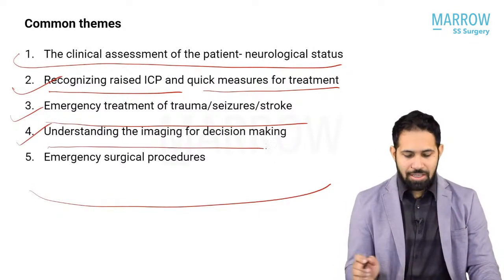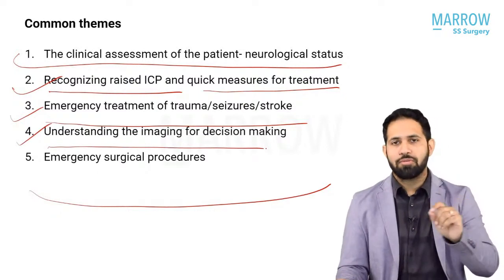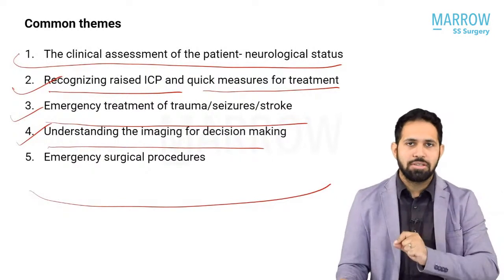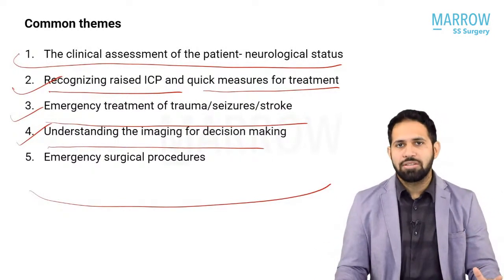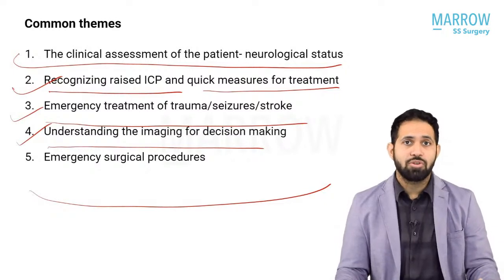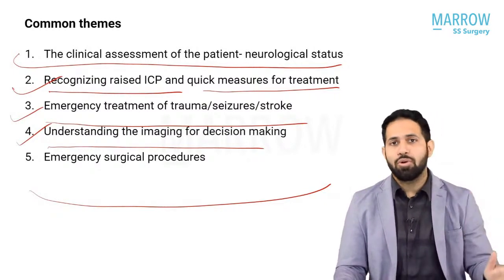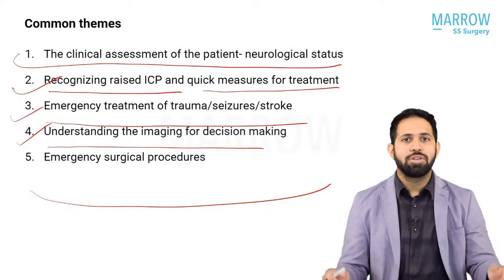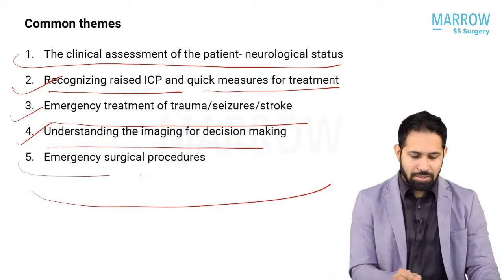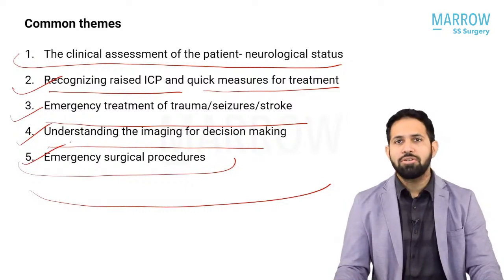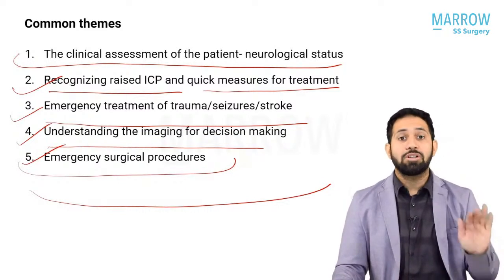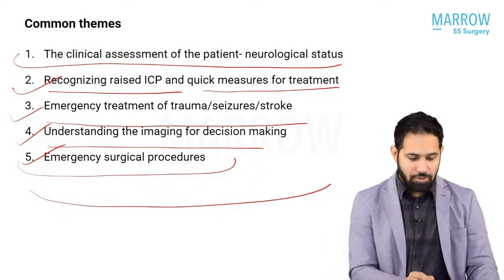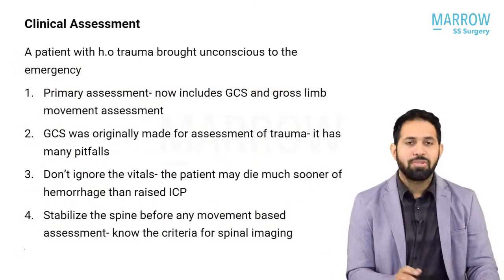The third concept is emergency treatment for trauma, seizures and stroke, which must happen immediately even at the assessment stage. Fourth is understanding the imaging for decision making — you often follow the patient to the CT or MRI, quickly read it, and make a decision about getting the operation theater ready. Finally, certain emergency surgical procedures that are commonly asked in MCQs are often done in the emergency room itself without waiting for the patient to go to the OT.